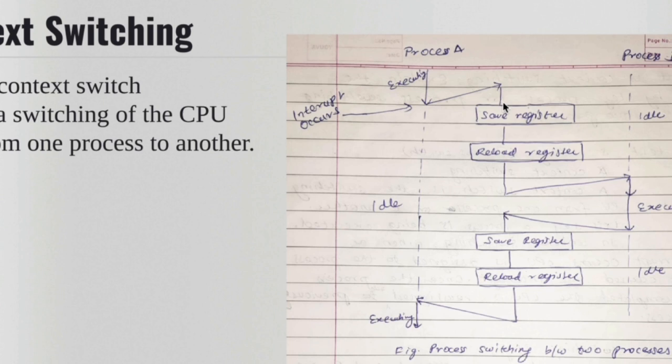The information about process A, which is the context of process A, is going to be saved inside of PCB which is process control block. So that information is saved so that it can be reloaded at the time of the process resumption. So that it can be reloaded at the time of resuming process A.